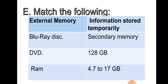Internal memory, in the left side you can see internal memory, Blu-ray disk, DVD and RAM. And in the right side of the table, it's written information stored temporarily, secondary memory, 128 GB, 4.7 to 17 GB. So, you will have to match column A with column B.